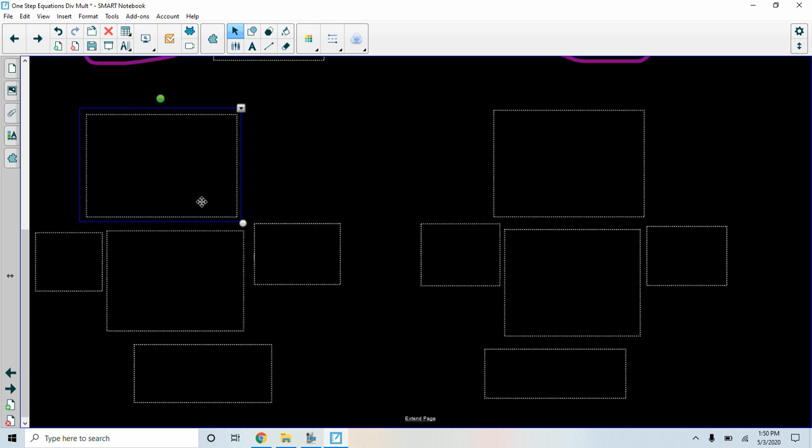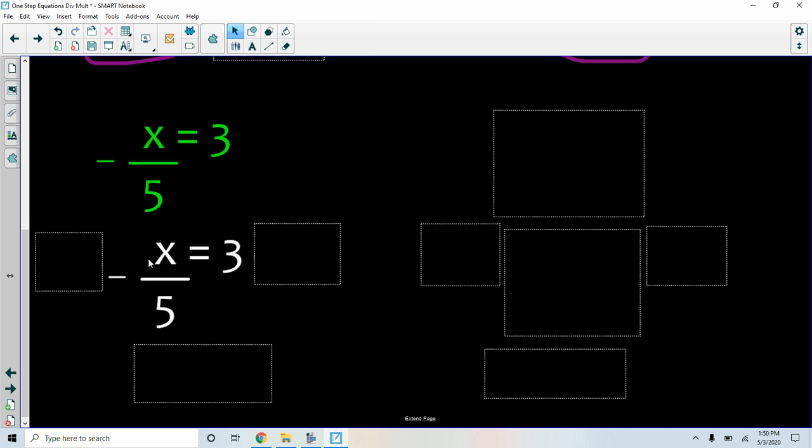Do a couple more. This time I have a minus sign in front. So I have it divided by 5, but I have a minus sign. So I want to, first of all, rewrite my equation, and I want to multiply by negative 5. I want to get rid of the negative and the 5, so I multiply by negative 5.